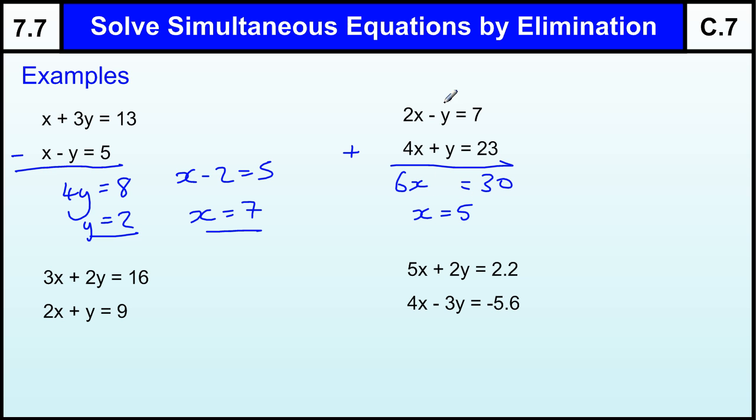And then again we put that into either of these two equations. I am going to put it into the top one. So 2X would be 10, because X equals 5. Minus Y equals 7. So what do you take away from 10 to get 7? Well that is 3. So X equals 5 and Y equals 3. If you are not sure whether you have done it right, you could then take your two values and put it into the other equations. Does that work? 4 times 5 is 20, plus 3 makes 23. Ideal.